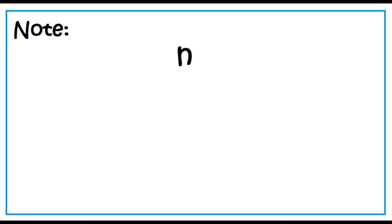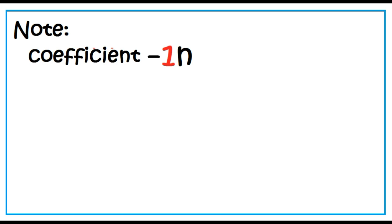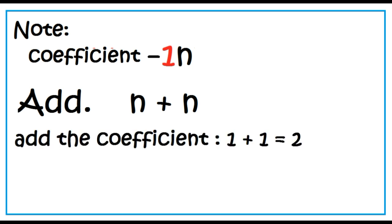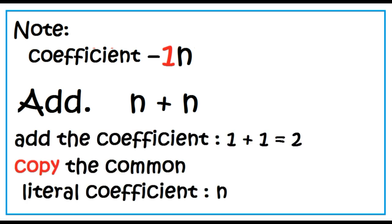Note: a variable expression without a written coefficient is understood to have 1 as its coefficient. So n plus n is just like 1 plus 1, then copy the common literal coefficient, which is n. Therefore, n plus n equals 2n.